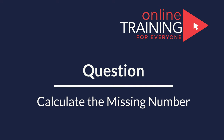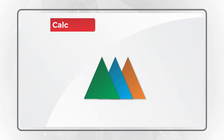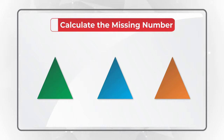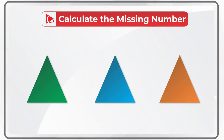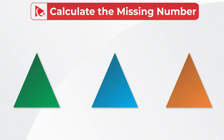Here is a very interesting question to see how quickly and effectively you can solve the challenge. You are presented with 3 triangles. Each triangle has numbers in the corners as well as a number in the middle. The first triangle has numbers 4, 18, and 2, and the number in the middle is 3.